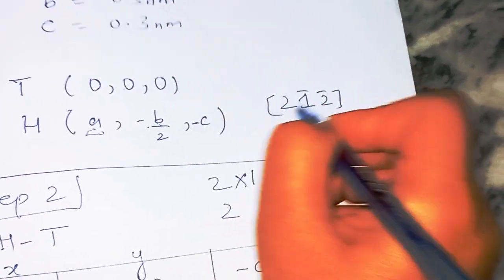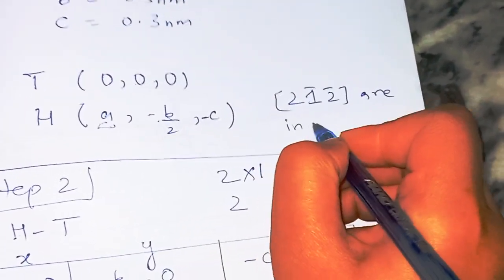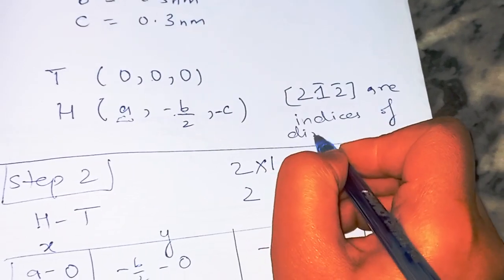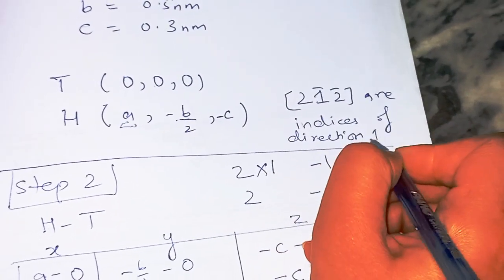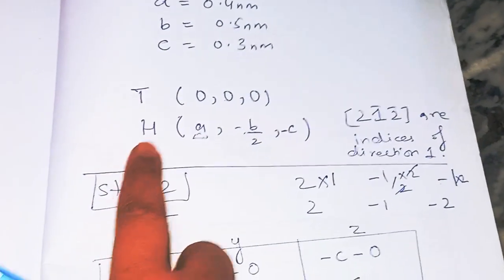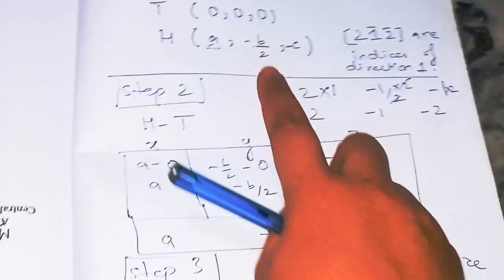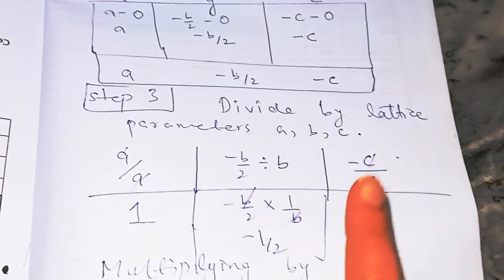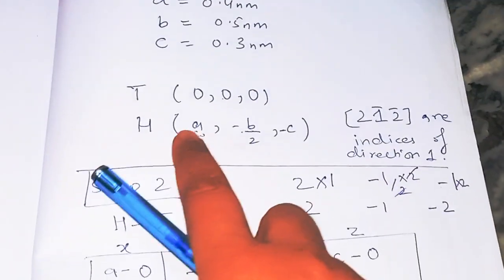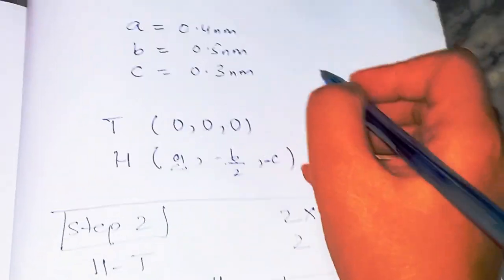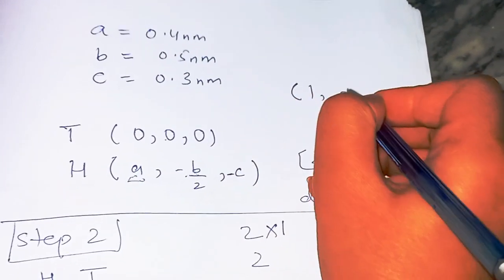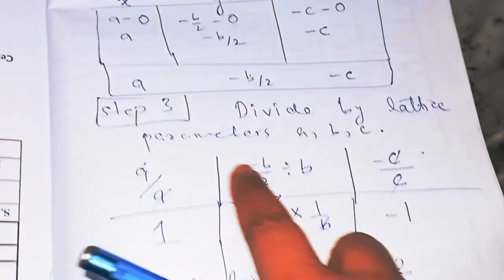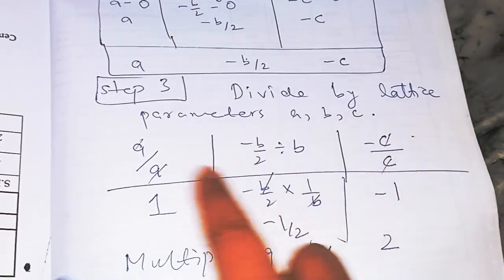These are the Miller indices [2, 1̄, 2̄] for direction one. Note: if you find coordinates in terms of lattice parameters, you must divide by the lattice parameter. If you already find them as fractions of the unit cell, that step is already done.